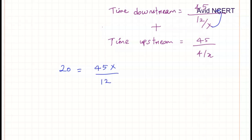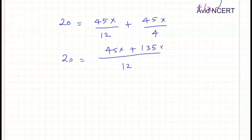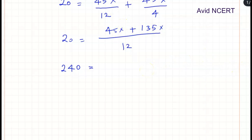Simplifying: x goes up, giving 45x/12 + 45x/4. Taking the LCM of 12 and 4, which is 12: 20 = (45x + 135x) / 12, which gives 20 = 180x/12. Solving, x = 240/180, which simplifies to 4/3.